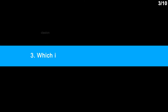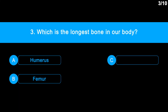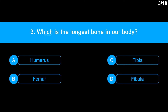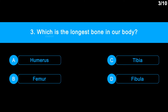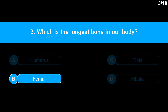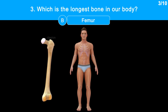Question 3: Which is the longest bone in our body? Option A: humerus. Option B: femur. Option C: tibia. Option D: fibula. Correct answer is Option B: femur. Femur is the longest and strongest bone in our body, located in the thigh.